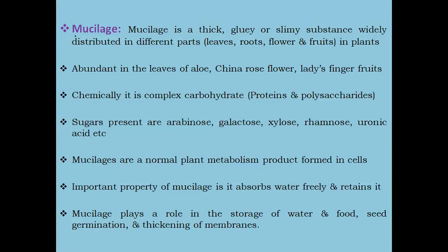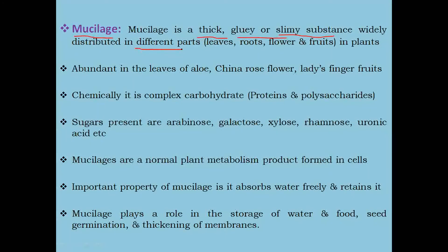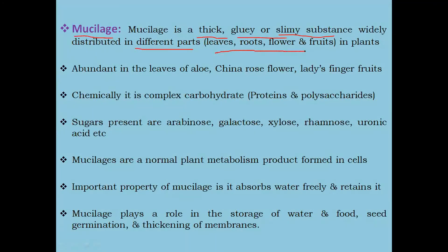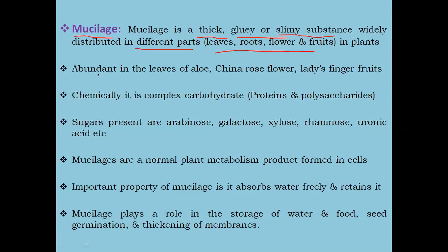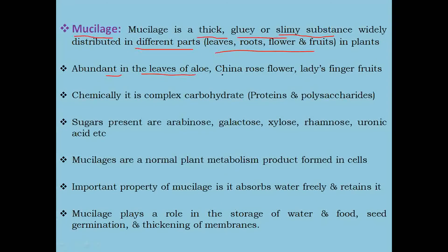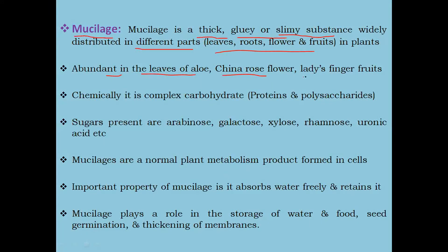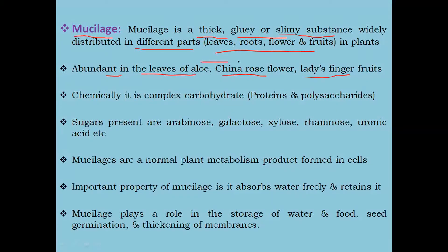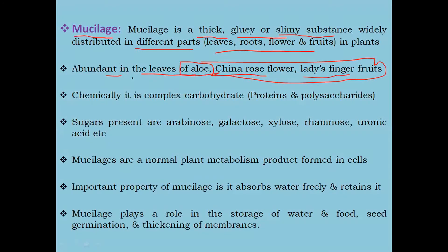The last one is mucilage. Mucilage is a thick, gummy or slimy substance, widely distributed in different plant parts, for example leaves, roots, flowers, and fruits. Mucilage is abundant in the leaves of yellow, china rose flower, and ladyfinger fruits. So these are some important examples in which mucilage is present.